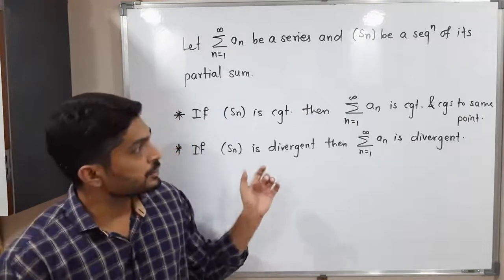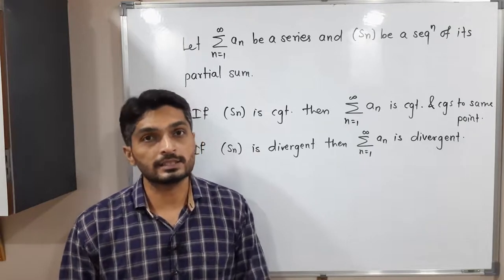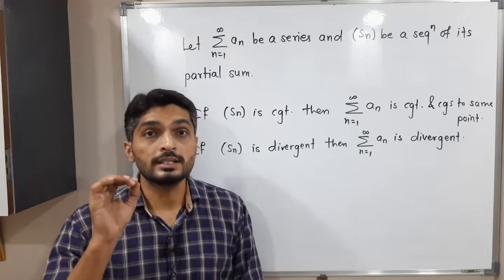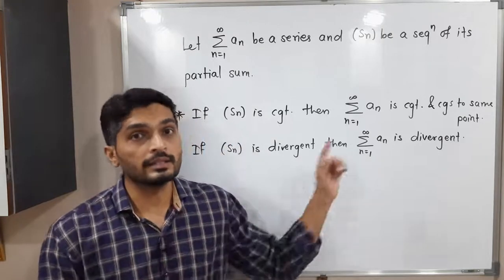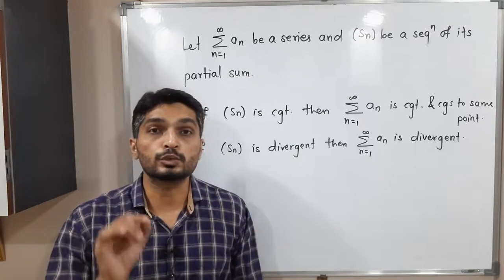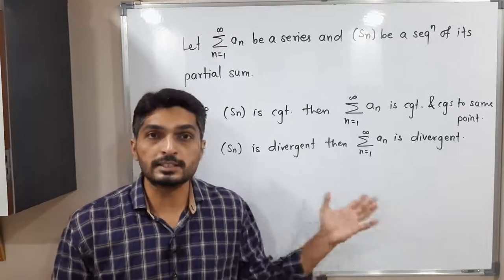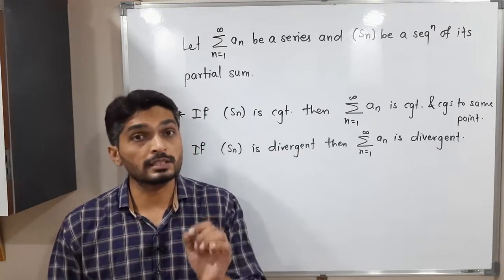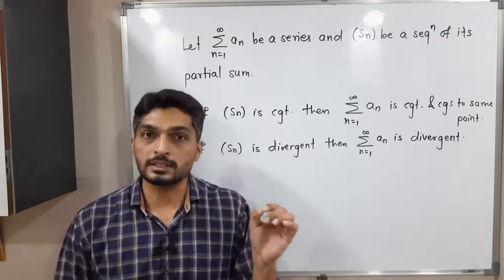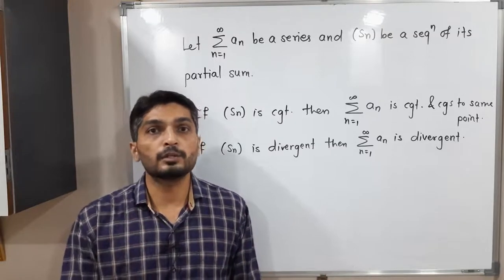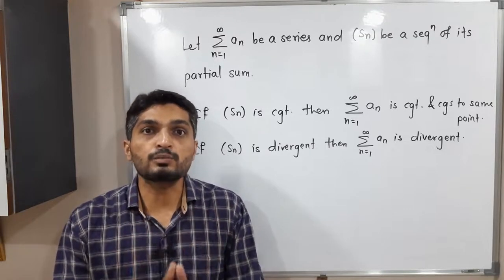One more definition: when we have a sequence of partial sums Sn and it is convergent, then we also say the series is convergent and it converges to the same point. That means if summation a_n converges to point a, the series also converges to point a. If the sequence of partial sums is divergent, the series is also divergent. We use the sequence of partial sums to decide convergence or divergence, using the results we already know for sequences of real numbers.